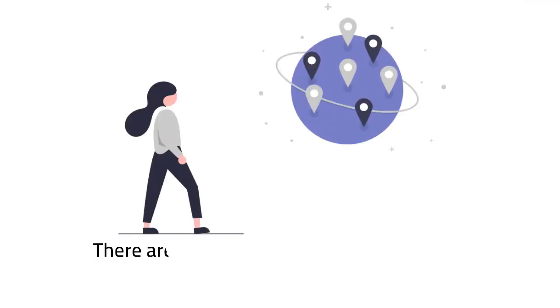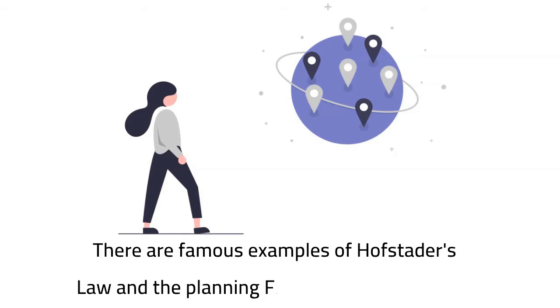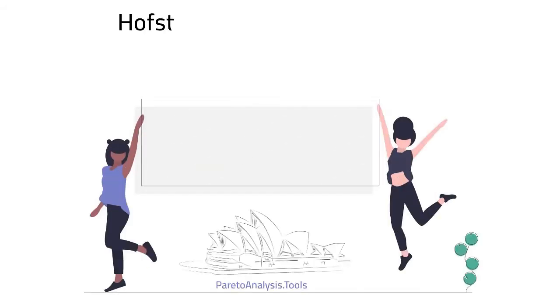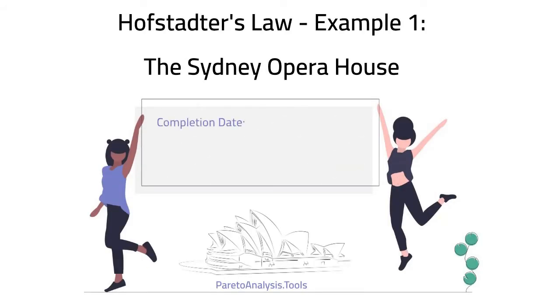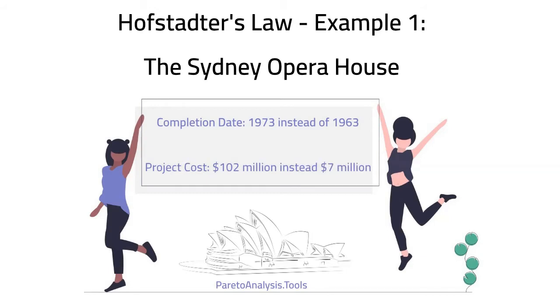Let's start with two world-famous examples of Hofstadter's law and the planning fallacy. The Sydney Opera House was expected to be completed in 1963. Unfortunately, only a scaled-down version opened a decade later, in 1973. Additionally, the original cost estimate of $7 million turned into a whopping $102 million.